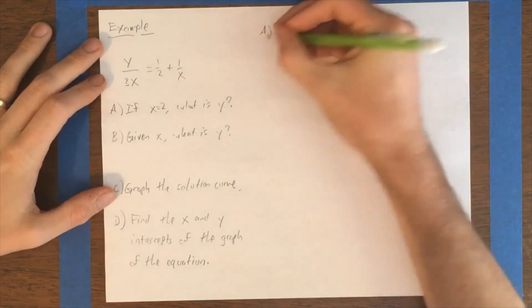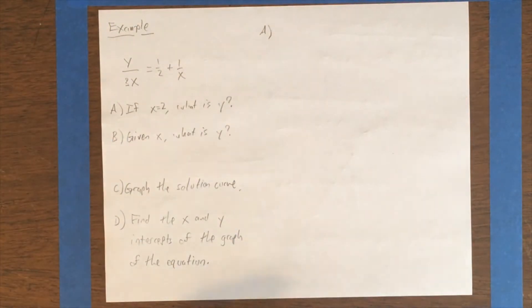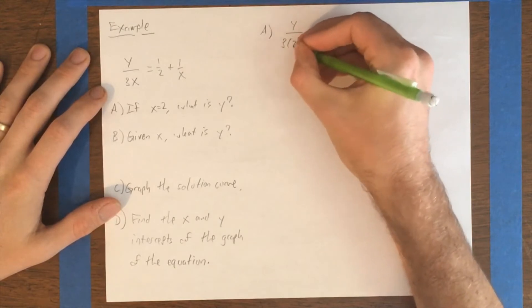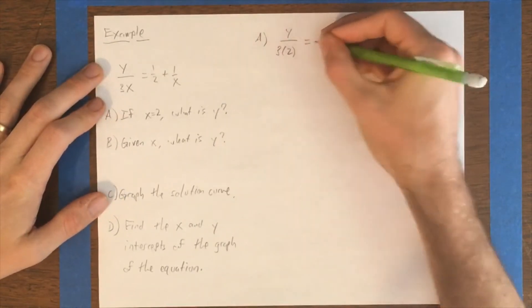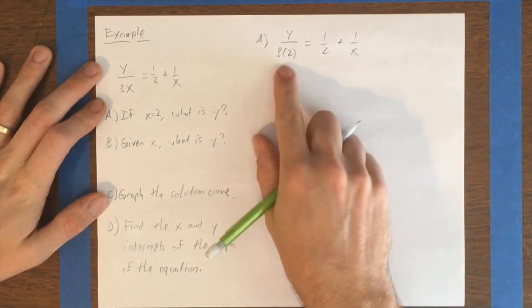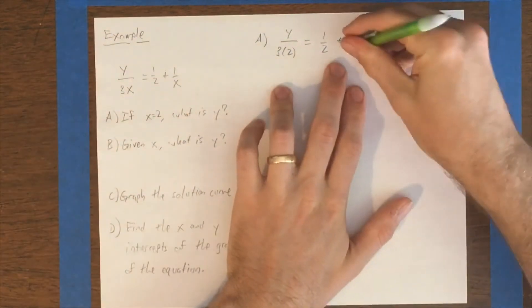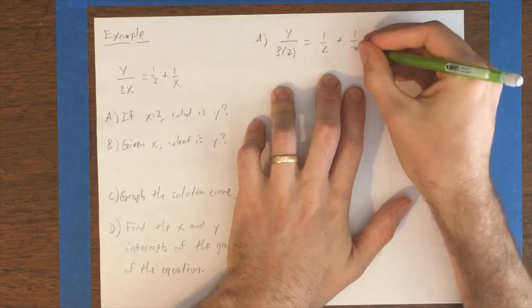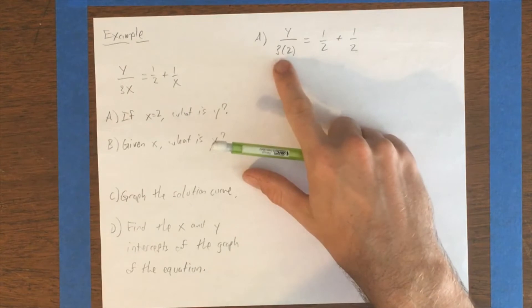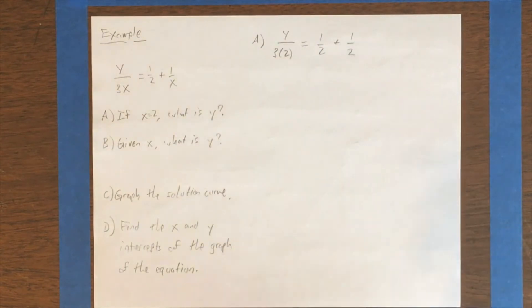All right, to answer that question, all we've got to do is substitute in 2 for x. So I'm going to do that now. y divided by 3 times 2 equals 1 half plus 1 over 2. And notice that when I substituted in, I introduced these parentheses. I could have instead written 3 times 2, but obviously I don't want to write just 32, because it looks like the number 32.